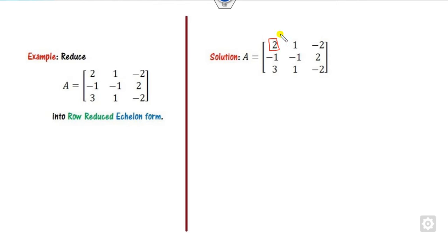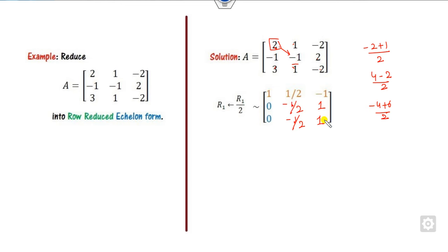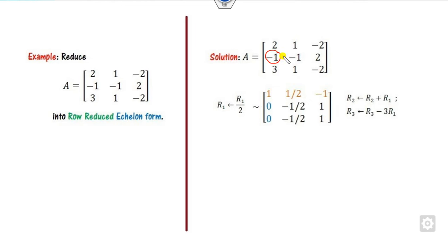Look at another example. Make the leading entry 1. Compute the values: this is minus 2; this is plus 1 divided by box element = minus half. Then 4 minus 2 divided by box element = 1. Compute: 2 minus 3 = minus 1 divided by 2; minus 4 plus 6 divided by 2 = 1. Write the operation: minus minus gives plus 1, and minus 3.